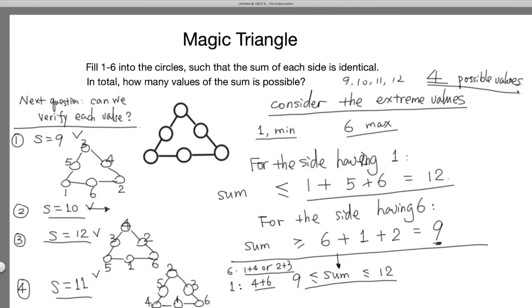For the recap of this lecture, for those magic triangles, one very useful approach is to consider the extreme values, where you should place the extreme values. And once you find very limited choices for those extreme values, you can just use trial and error to get the final solutions.